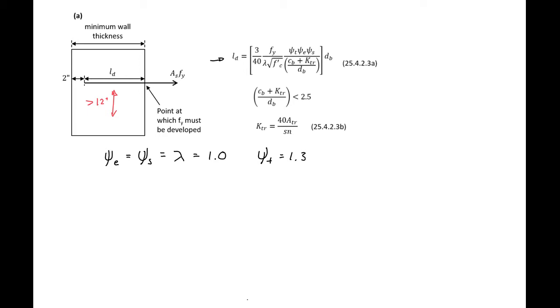Next we'll look at our CB plus KTR over DB term. For solid blocks of concrete, this term is going to be equal to our upper limit 2.5. So we'll have a CB plus KTR over DB equal to 2.5, and this is true for solid or large blocks of concrete.